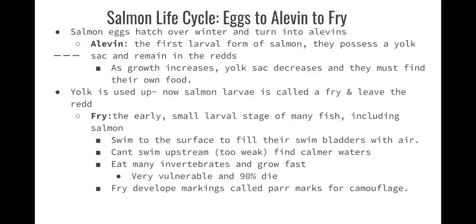Going from eggs to alevins to fry: salmon eggs will hatch over the winter and turn into alevins. Alevins are the first larval stage of salmon — they have a yolk sac on them still and will stay in the redd. As they grow, they'll start to use up the yolk sac's energy and food supply, and then they must go find their own food. Once the yolk is used up, the larvae are called fry, and they leave the redd.